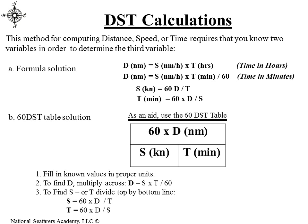If we want to solve for speed, it equals 60D divided by time, with time in minutes. If we want to find time, it equals 60 times distance divided by speed. Some folks like the 60 DST table. In that table, 60 times D is over S and T. So solving for D: distance equals speed times time divided by 60. Solving for speed: 60 times D divided by T. Solving for time: 60 times distance divided by speed.